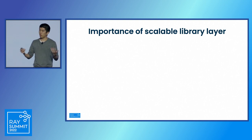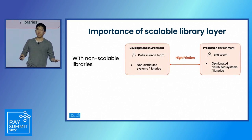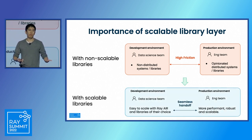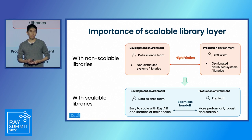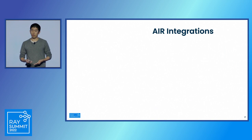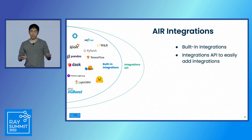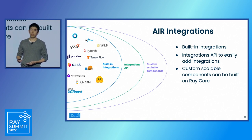This scalable library layer is really important. If you have non-scalable libraries, there can be a high-friction handoff between development and going to production. But if you have a scalable library layer, you can use the same infrastructure and the same code in both development and production, improving productivity for both data scientists and platform engineers. Finally, Air offers scalable integration with best-of-breed libraries and MLOps tools. This includes built-in integrations for the most popular frameworks, developer APIs to easily add new integrations, and since Air is built on Ray, you can also build custom scalable components using Ray core directly.